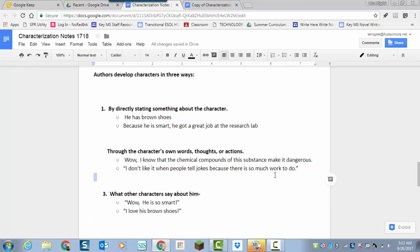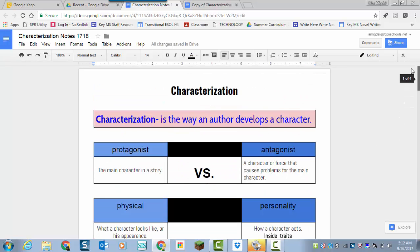And then the third way authors develop a character is by what other characters say about him. Wow, he's so smart. I love his brown shoes. So that is characterization. Now we're going to do some practice.